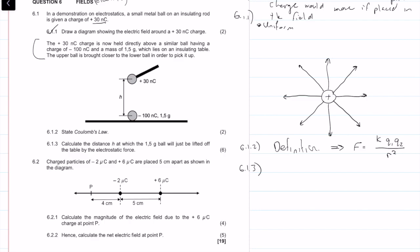6.1.3. The 30 nanocoulomb charge is now held directly above a similar ball having a charge of minus 100 nanocoulombs and a mass of 1.5 grams. The mass is 1.5 times 10 to the minus 3 kilograms. Remember our SI unit for mass is kilograms, so we need to convert that. The upper ball is brought closer to the lower ball in order to pick it up.